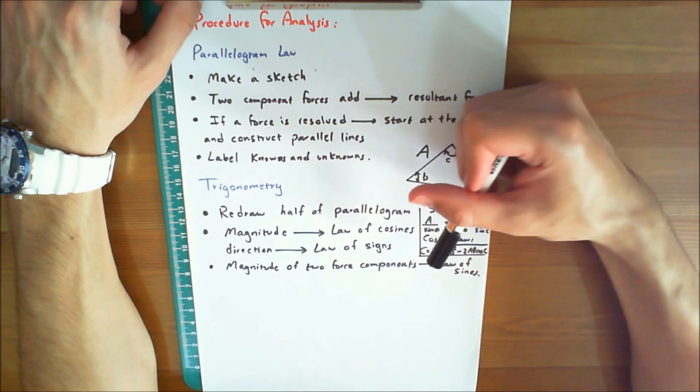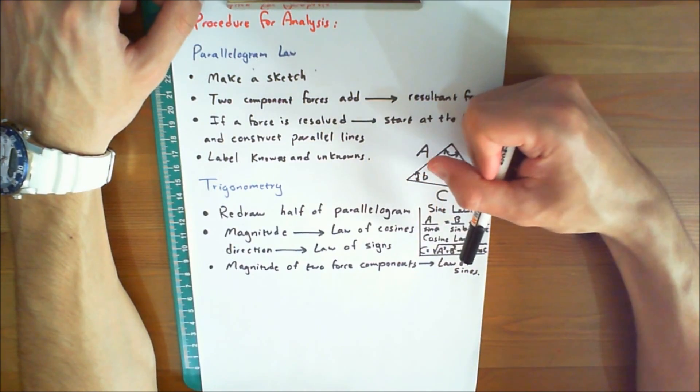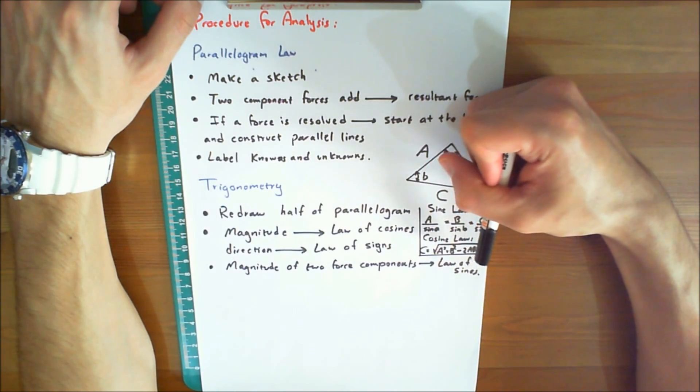And the cosine law states that C is equal to square root of A squared plus B squared minus 2AB cosine C.